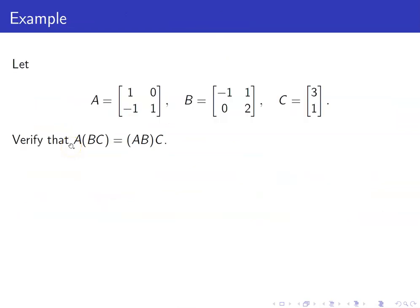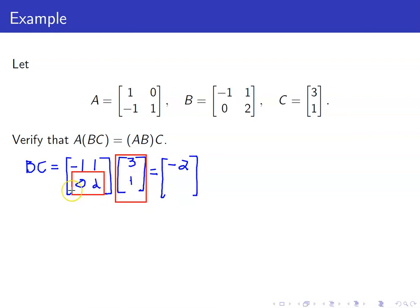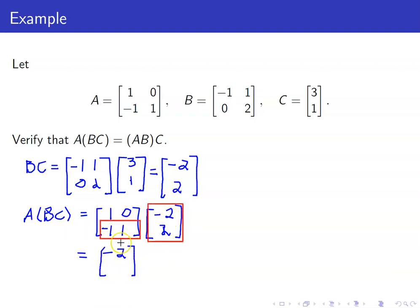Let us verify that matrix multiplication is indeed associative. Let us compute A times (B times C). First, let us compute BC. BC equals: first row times first column is negative 1 times 3 plus 1 times 1, so that's negative 2. Second row times first column is 0 times 3 plus 2 times 1, which is 2. We now multiply this result by A on the left.